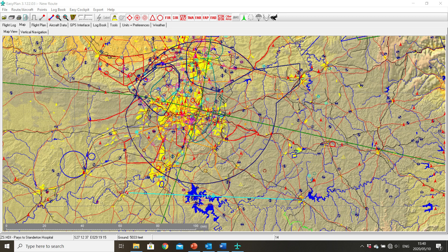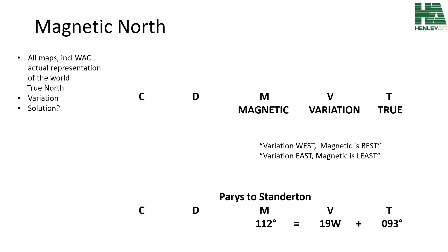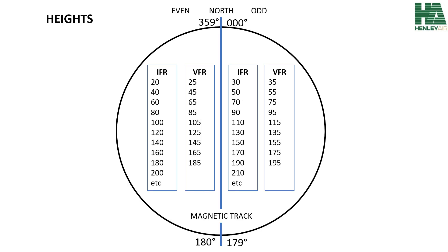In our next example, we'll be flying from Parais to Standerton. Following the same principle, you can see that flying from Parais to Standerton will have a true track of 093 degrees — it's almost due east. The variation in the Johannesburg area is 19 degrees west. So in order to fly from Parais to Standerton, you have to fly a magnetic track of 112 degrees. And again, be careful of the red herrings of wind and heading corrections. We will now look at the semi-circular rule to find out what height we're supposed to fly. We need to fly a magnetic track of 112 degrees, which puts us squarely on the eastern side of the semi-circular rule — the odd side.